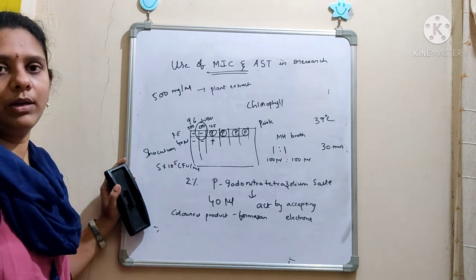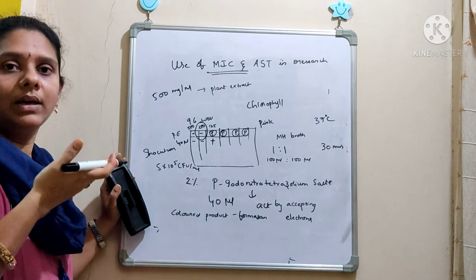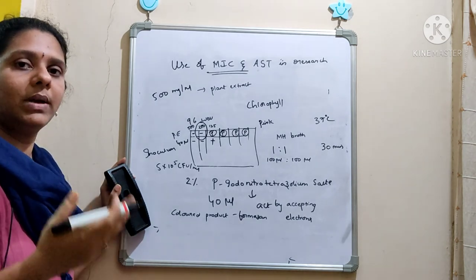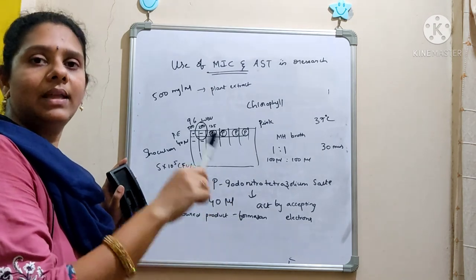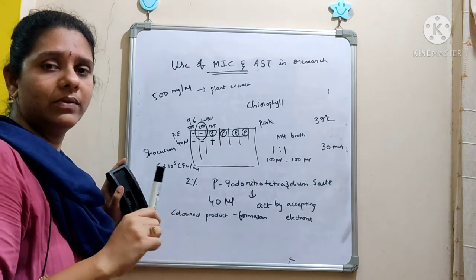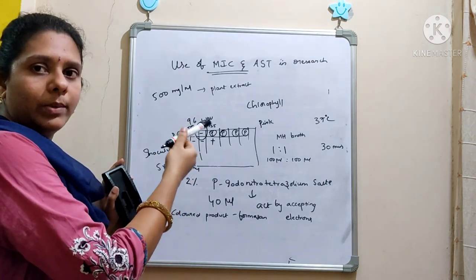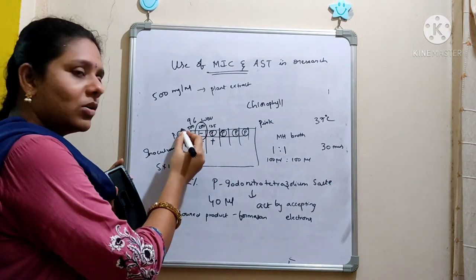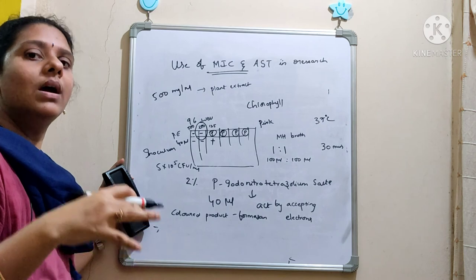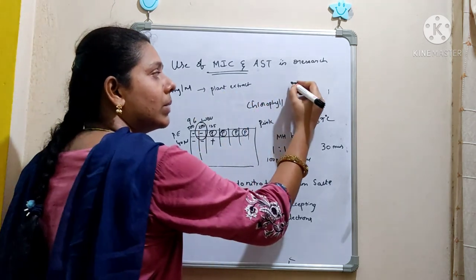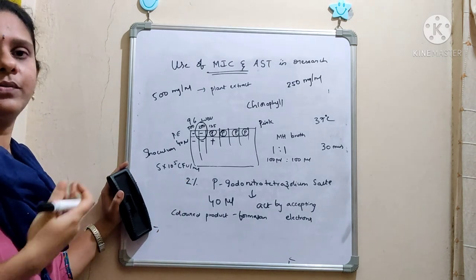This is how you report an MIC value when working with plant extracts. If you are working with an antibiotic solution, there is no problem because they are colorless — you can clearly identify the presence or absence of growth. But with plant extracts, which are green due to chlorophyll, you use the indicator dye p-Iodonitrotetrazolium salts to differentiate. At both 500 mg/ml and 250 mg/ml the growth is inhibited, but for the MIC value you report the least concentration that effectively kills the test organism — so the MIC value is 250 mg/ml against E. coli or whatever test organism was used.